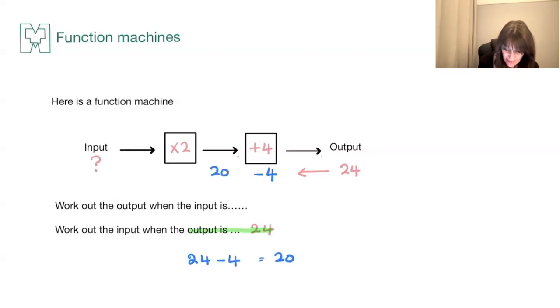So at this stage, I have 20 going into the machine in this direction, meaning I'm doing the exact opposite of what I can see. I can see times by two, but I must remember to do divide by two. So I've got 20 divided by two, which would give me 10. So what's the input when the output is 24? It is 10.